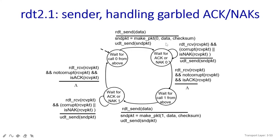So here is what we learned: if we are getting a positive acknowledgement, no problem — send the packet, receive the packet, send the acknowledgement, and receive the acknowledgement. That's four stages completed. But if in the acknowledgement stage you get a negative acknowledgement, send back the same packet to the previous source and receive the packet once again.